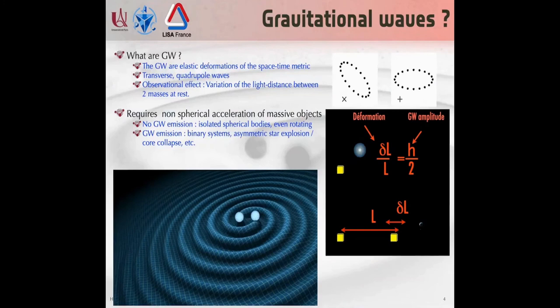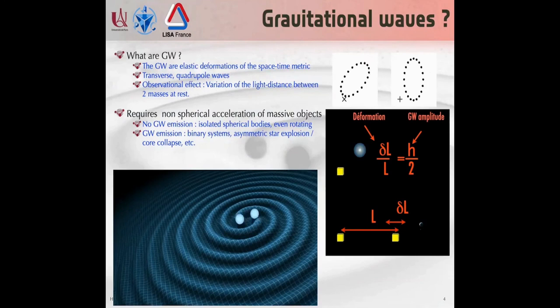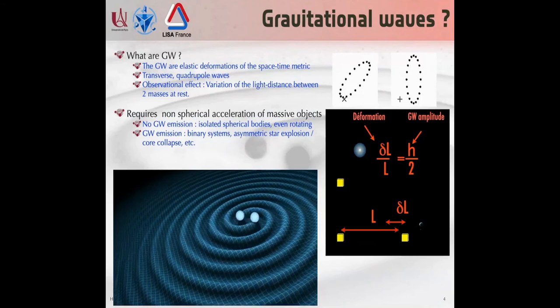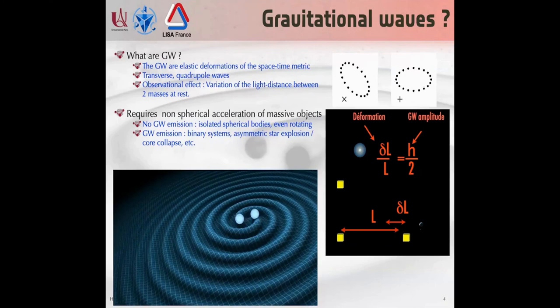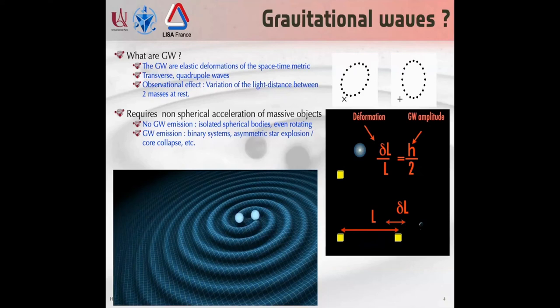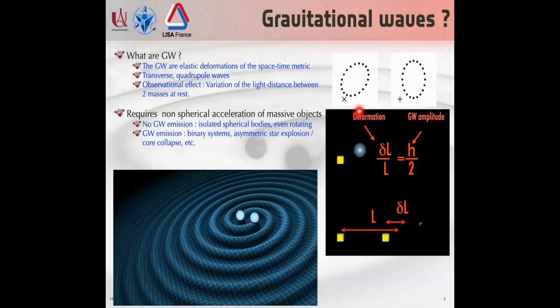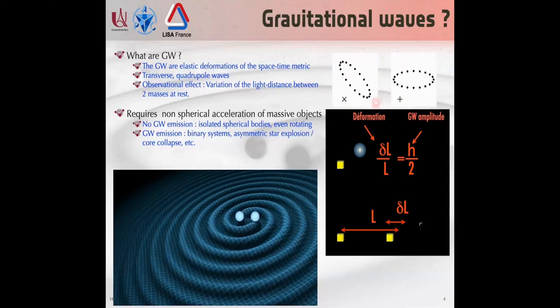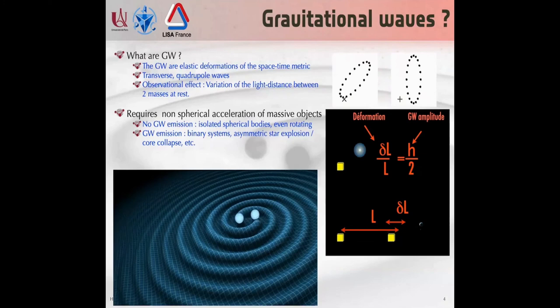Gravitational waves are elastic deformations of the space-time metric. If you put test masses at rest on the space-time metric and a gravitational wave passes perpendicularly through, the test masses will oscillate in two different movements: one called the cross polarization and one called the plus polarization. This is basically the same idea as for electromagnetic waves, but we are talking about transverse quadrupole waves.